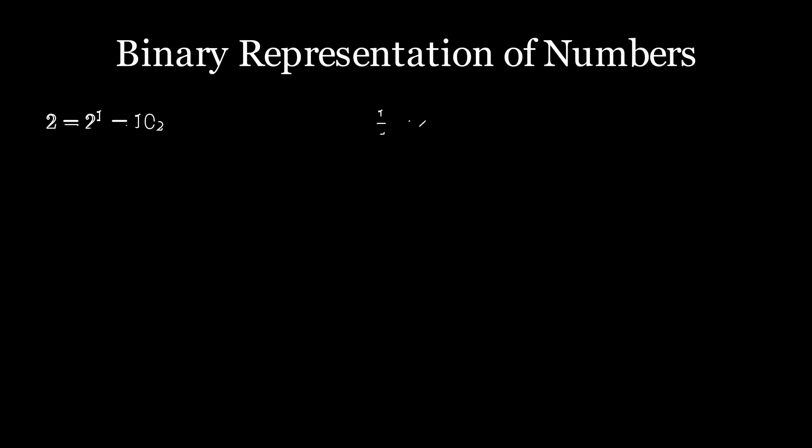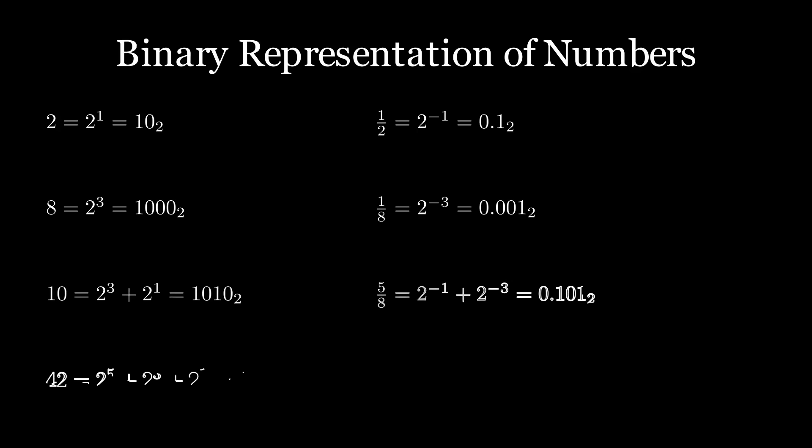And as you might anticipate we can do that by using the binary representation of numbers. You probably already know how to express a natural number as a sum of powers of two. Well in the same way you can represent numbers between zero and one as sums of negative powers of two. That gives you a binary expansion for any such number. If you haven't seen this before I encourage you to play around with it. Try writing down the binary expansion of a few sample fractions and see what happens.